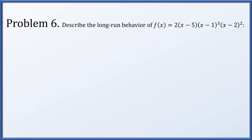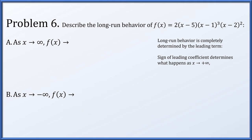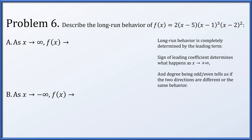Problem 6: describe the long-run behavior of f(x) = 2(x minus 5)(x minus 1) cubed (x minus 2) squared. As x goes to infinity or minus infinity — that's long-run behavior. Long-run behavior for a polynomial is completely determined by the leading term. If the leading coefficient is positive or negative, that determines what happens as x goes to positive infinity. Whether the degree is odd or even tells you whether the two end-behavior directions do the same or different things.